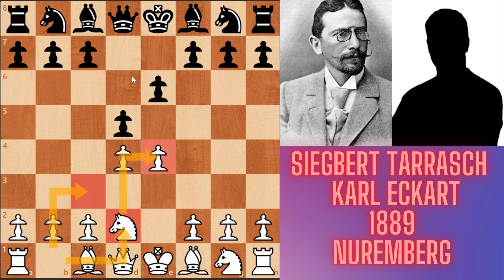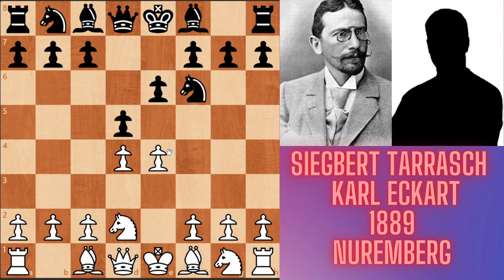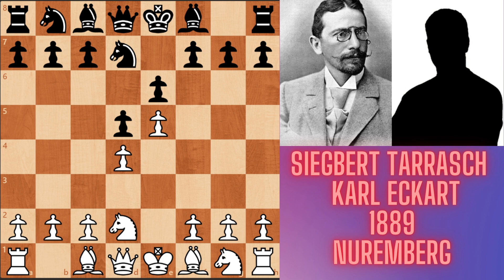Knight d2 defends the pawn instead of Knight c3. Tarrasch develops his Knight to d2 square because of Bishop b4 pinning in the Winawer variation. Now if Black takes, White takes with the Knight and this transposes into a Knight c3 variation. In the game, Black played Knight f6, attacking the e4 pawn. Tarrasch played e5, grabbing space and attacking the Knight. Knight goes to d7 and Bishop d3 played by Tarrasch.